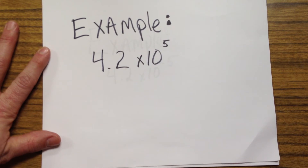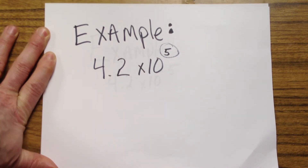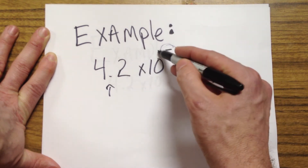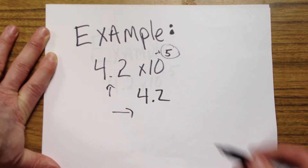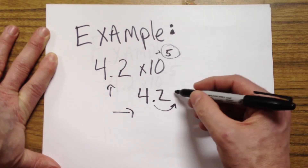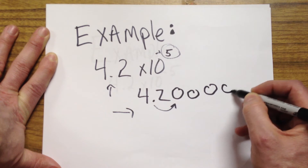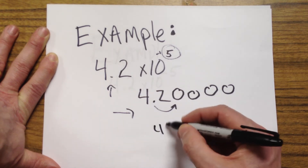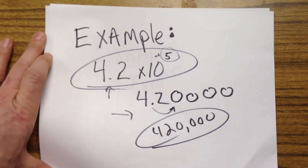Here's an example converting scientific to decimal. We have 4.2 times ten to the fifth. The five tells us we need to move the decimal point five places. It's positive, so five places to the right. Starting from 4.2, we move one place, two places, and since there are no more digits we add zeros: three, four, five places. So 4.2 times ten to the fifth is 420,000. That number and that number are the same — just two different ways to show it.